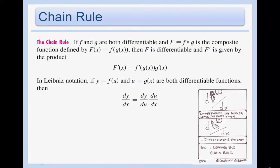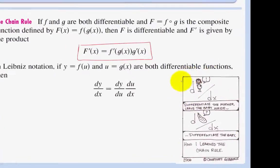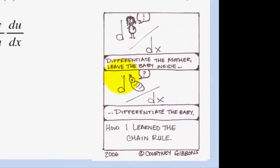The chain rule is one of my favorite things to teach, but it is a little difficult to wrap your head around the first try. We will be going over it in class again, but this should give you a good understanding. So if we have two differentiable functions f and g, and we have f of g of x — also written as f following g — then f is differentiable, and the derivative is given by f prime of g of x times g prime of x. This is the definition of the chain rule. As this comic says: differentiate the mother, leave the baby inside, and then differentiate the baby.